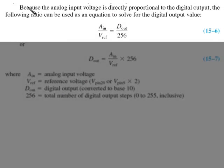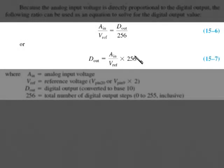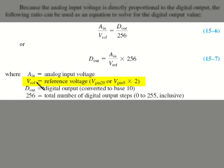Because the analog input voltage is directly proportional to the digital output, the following ratio can be used as an equation to solve the digital output value. The analog in relative to the VREF is proportional to or equal to the digital out versus 256. If you want to solve for D out, use a little algebra. The VREF is actually going to be the voltage on pin 20, which is your VCC pin, or it's going to be whatever's on pin 2, which is the VREF over 2, that value times 2. The digital output will be whatever it is converted to base 10 versus 256.